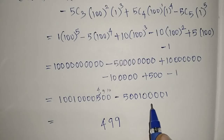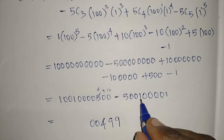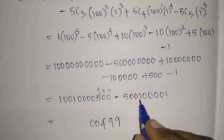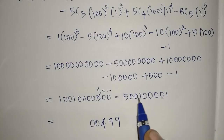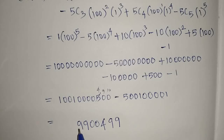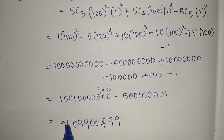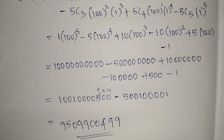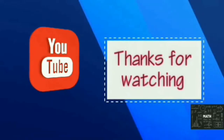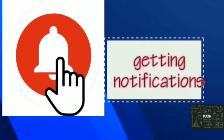Performing the subtraction: borrowing where needed, 0 minus 1 requires borrowing, giving 9. Then 9 minus 0 is 9, and continuing down: 100 minus 5 gives 95. The final answer is 9,509,900,499. I hope you understand. Thank you for watching — subscribe for more videos and press the bell icon for notifications.